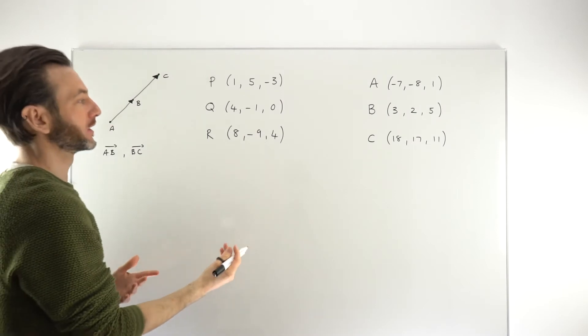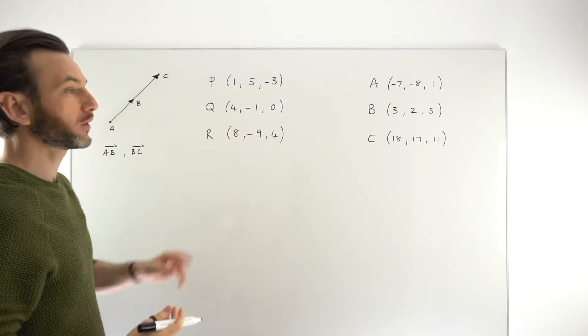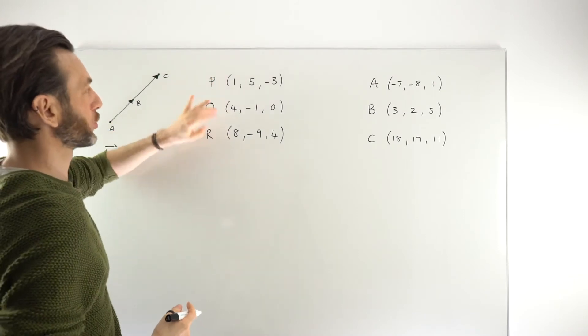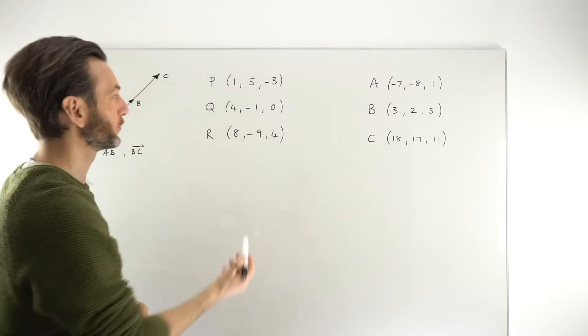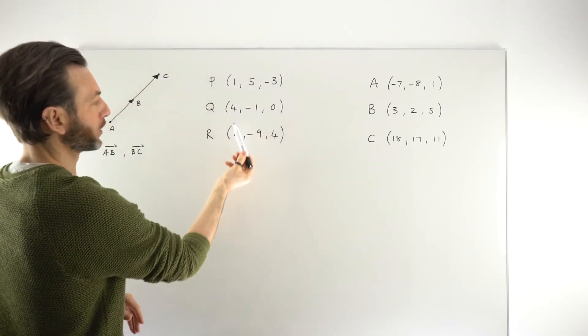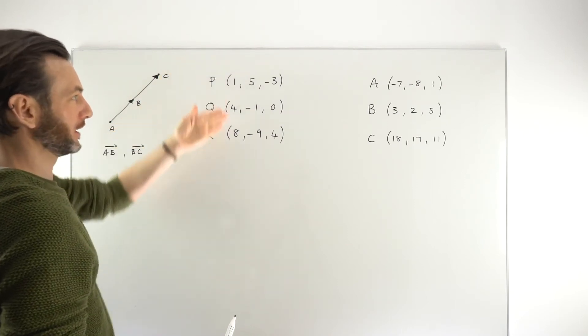So the first thing to do is work from your coordinates to the vectors. So just quickly scan your points to make sure that the alphabetical order is also the order in which the points are lined up. So, for example, 1, 4, and 8 is an order of P, Q, and R. So that tells us that these are lined up.